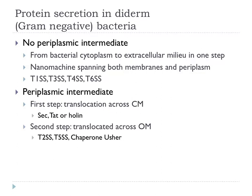If there is no periplasmic intermediate, we have this kind of nanomachine. Type 1, type 3, type 4, and type 6 secretion all have this property where there is no periplasmic intermediate. Where there is a periplasmic intermediate, there is a first step of translocation across the cytoplasmic membrane, and then a second step across the outer membrane. Type 2 secretion, type 5 secretion, and the Chaperone-Usher system all have methods for translocating across the outer membrane.